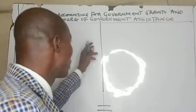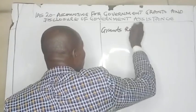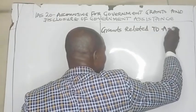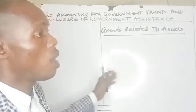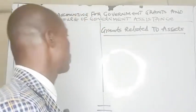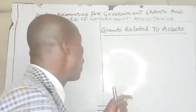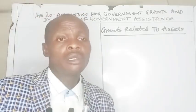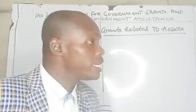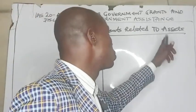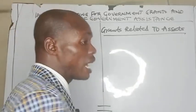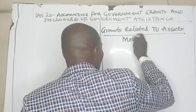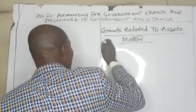Grants related to assets, or capital grants, are grants for the construction or acquisition of non-current assets. There are two methods of accounting for — or measuring — grants related to assets.